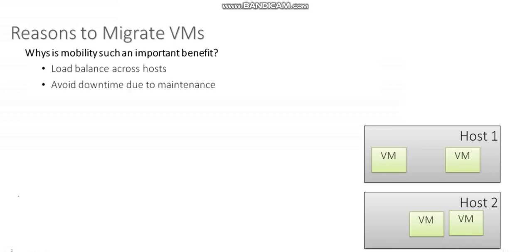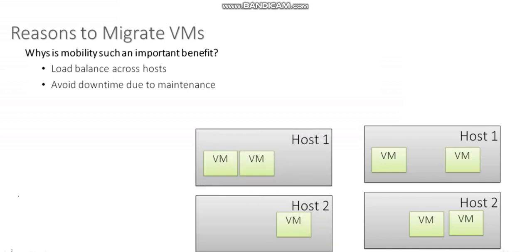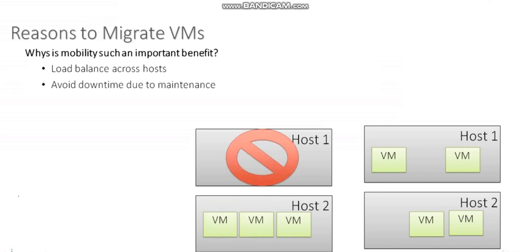Another reason is performing physical maintenance. Maybe I need to install physical memory in a host or do some other maintenance that will require downtime. I migrate all of the VMs to another host, perform my maintenance — install memory, install patches, reboot — and then bring the VMs back once the host is back up. The two most common reasons to migrate VMs are: number one, a performance benefit, and number two, avoiding downtime.